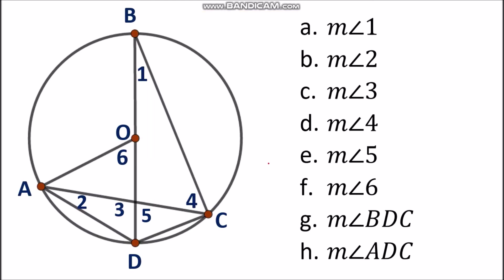So this is the figure — circle O with the placement of angles. We always have to start with the given. The measurement of arc AB is 120 degrees, and the measurement of arc BC is 150 degrees.